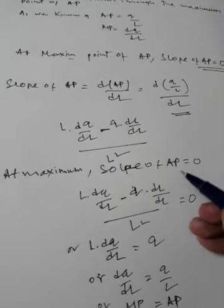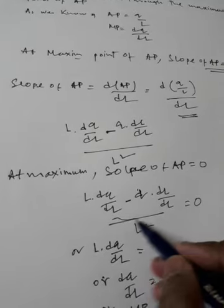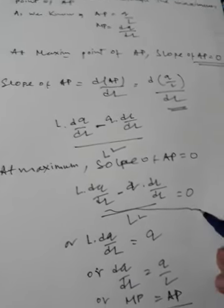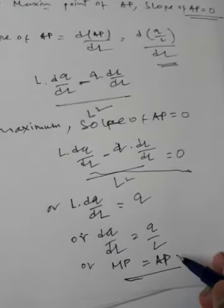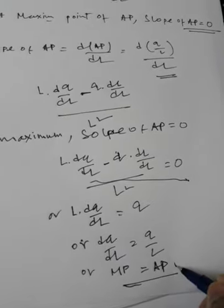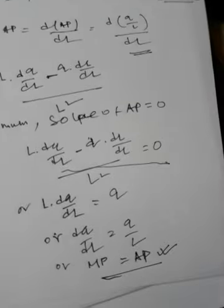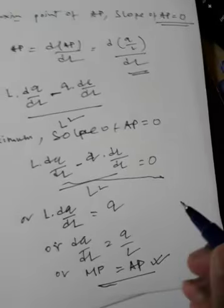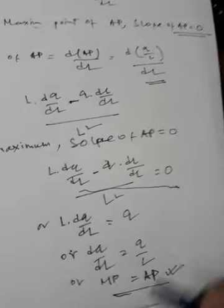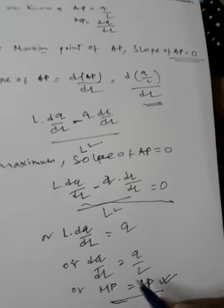We have started at maximum point A condition. At the maximum point, MP equals AP. This is the proof. At the maximum point of AP, MP and AP are equal.